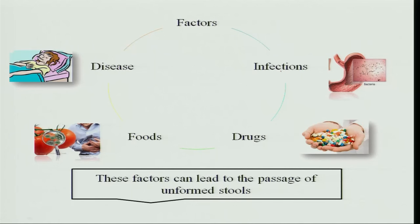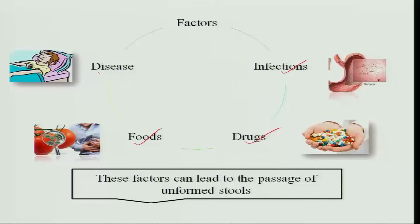The factors are: it may be because of infection — any bacterial infection can cause diarrhea — or sometimes when we get excess antibiotics, that also leads to diarrhea. Some foods that are stale, or foods which the gastrointestinal tract is not able to tolerate, also cause diarrhea. It is an associated symptom along with some diseases — sometimes fever or other diseases may accompany diarrhea. These factors lead to passage of unformed stools, meaning the transit time in the intestine is very low and the food passes very fast through the intestinal tract.